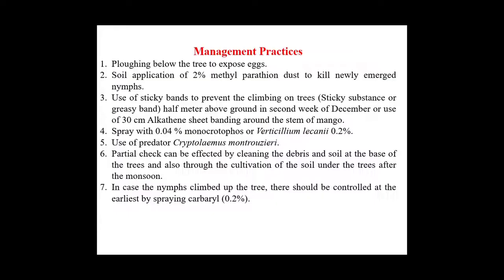Management of mealybug: plow below the tree to expose eggs. Apply 2% methylparathion dust in the soil to kill newly emerged nymphs. Use sticky bands to prevent climbing on trees. Spray with 0.04% monocrotophos or Verticillium lecanii 0.2%. Use predator Cryptolaemus montrouzieri. If nymphs climb the tree, control at the earliest by spraying carbaryl 0.2%.